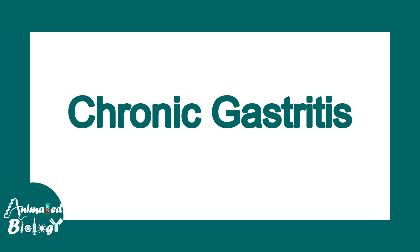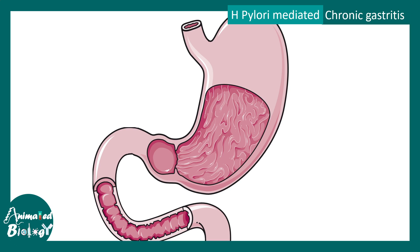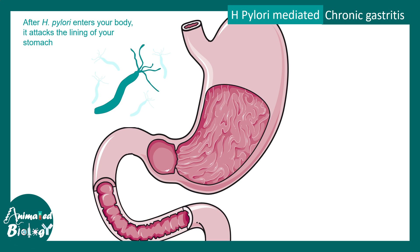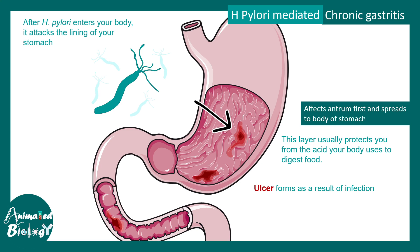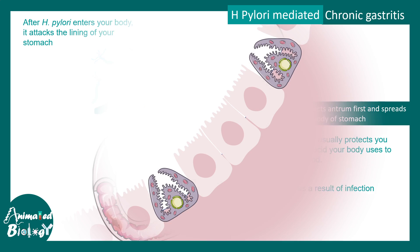Chronic gastritis is often associated with H. pylori infection. H. pylori enters the body through contaminated water and attacks the lining of the stomach. This lining is important because it protects the digestive system from acids. When damaged, stomach acid gets into deeper regions and causes ulcers. Generally the antrum part of the stomach is affected first, and later the infection spreads into the entire stomach.